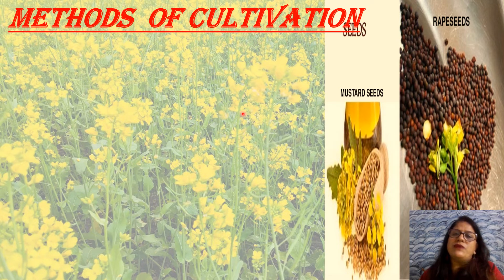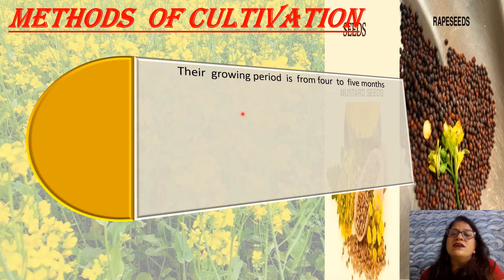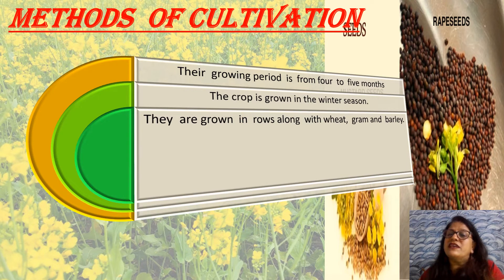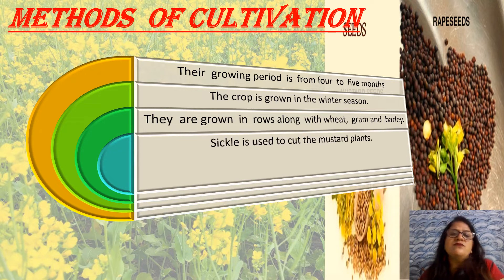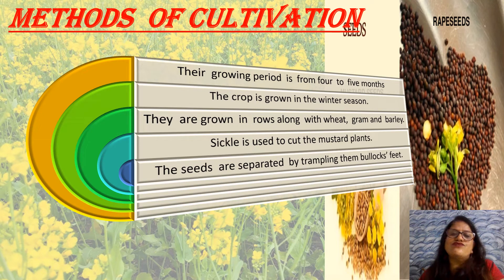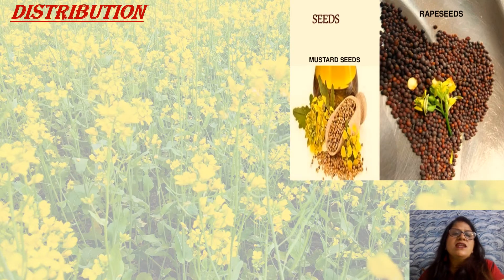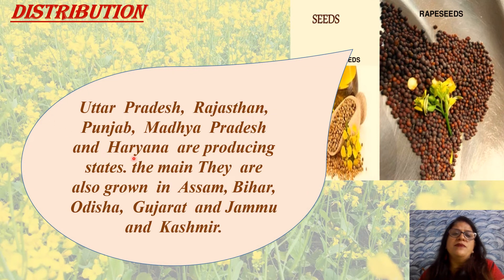Methods of cultivation: the crop is grown in the winter season along with wheat, gram, and barley in rows. It is sown by broadcasting or drilling method. Harvesting is carried out as soon as the pods begin to turn yellow and the seeds become hard. Sickles are used to cut the mustard plants. The plants are tied and kept for five to six days to dry. Threshing is done with sticks and winnowing separates grains from the husk. Distribution: it is extensively found in Uttar Pradesh, Punjab, Haryana, Rajasthan, West Bengal, Assam, Bihar, Orissa, Gujarat, and Jammu and Kashmir.